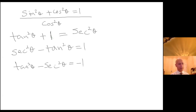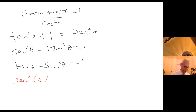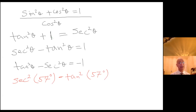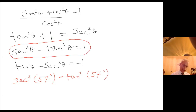So here is the problem from email two: secant squared of 57 degrees minus tangent squared of 57 degrees — find the exact value of that. Well, look at this — this perfectly matches my identity right here. I know that secant squared of theta minus tangent squared of theta equals one. So this equals one.